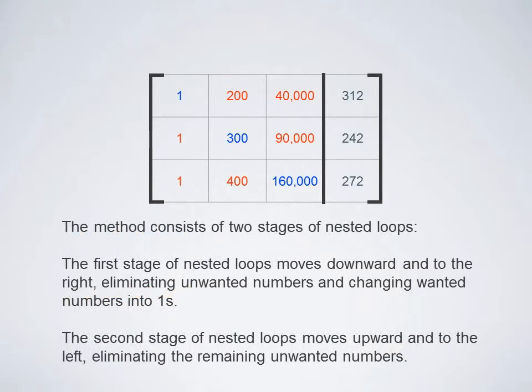My method basically consists of two stages. You start at the upper left cell. And in the first stage, you move downward and to the right. As you move downward and to the right, you eliminate all the unwanted numbers. And when you hit the wanted diagonal numbers, you turn those into ones. And after you hit the diagonal numbers, you move down to the next row. Once you've gone all the way down to the bottom row, and you've gone all the way to the right, to the last diagonal number, that is the end of the first stage. The second stage moves upward and to the left. And as it moves upward and to the left, it eliminates all of the unwanted numbers.